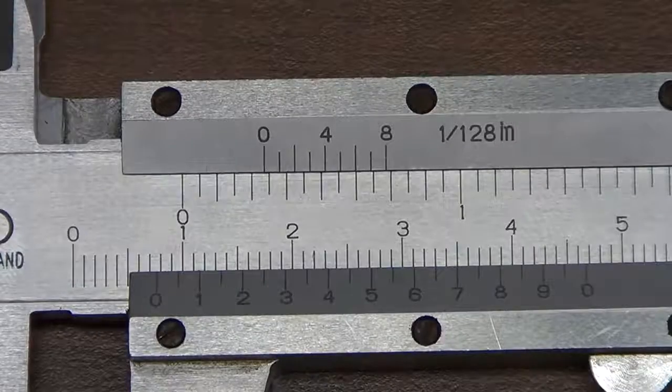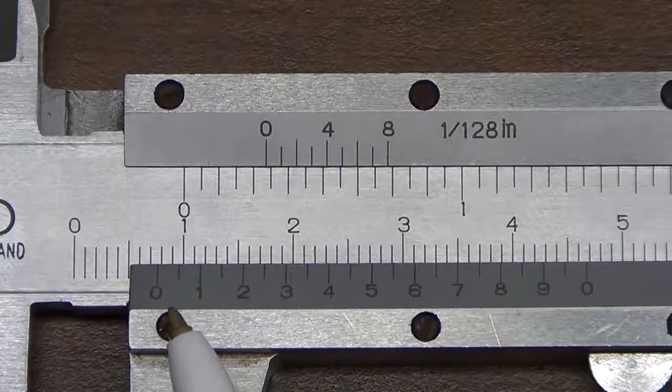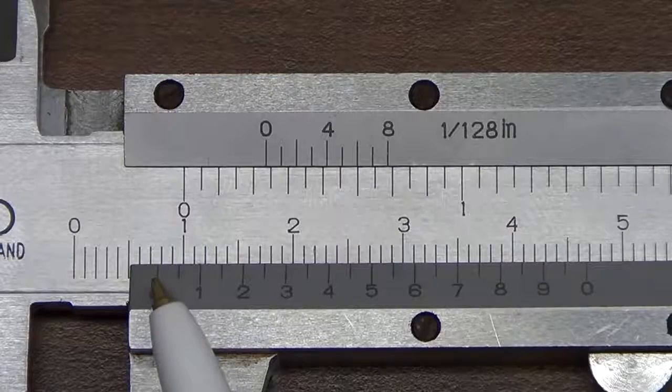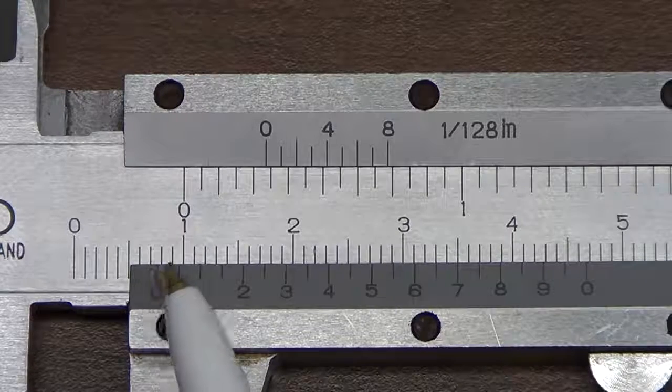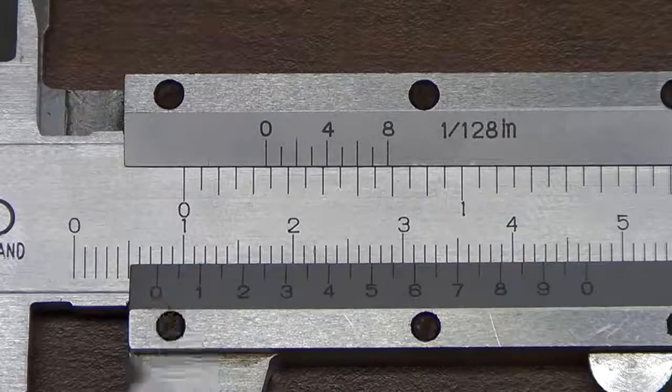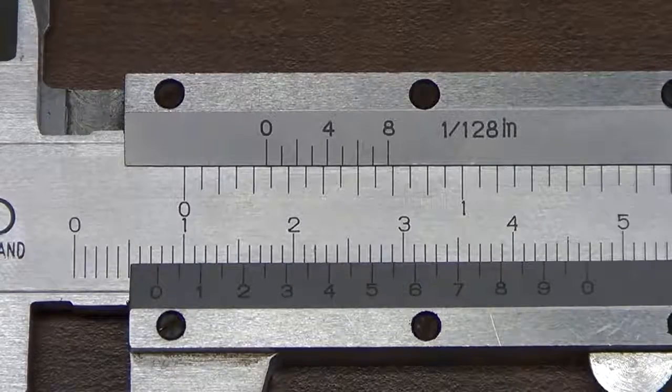So now when we look back, this 0 on the minor scale is somewhere between 0.7 and 0.8 on the major scale. So this gives us some confidence that our measure is correct.